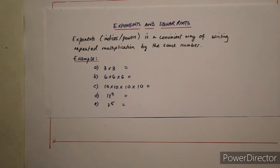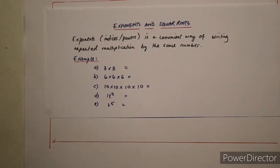In this next lesson for Grade 9 and 10 mathematics, we'll be looking at exponents and square roots. Exponents, sometimes known as indices or powers, are a concise way of writing repeated multiplication of the same number. So when you are multiplying the same number 3 or 4 times, it's much better to write it using the indices or exponents form.